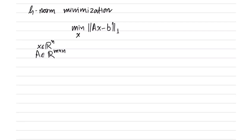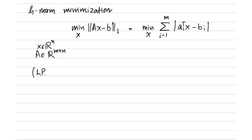This is an m×1 dimensional vector whose L1 norm we are taking. So this can be written as min over x of the summation over i equal to 1 to m of the absolute value of A_i transpose x minus b_i. This is actually a linear programming problem. We can write this as an LP by application of the epigraph trick.